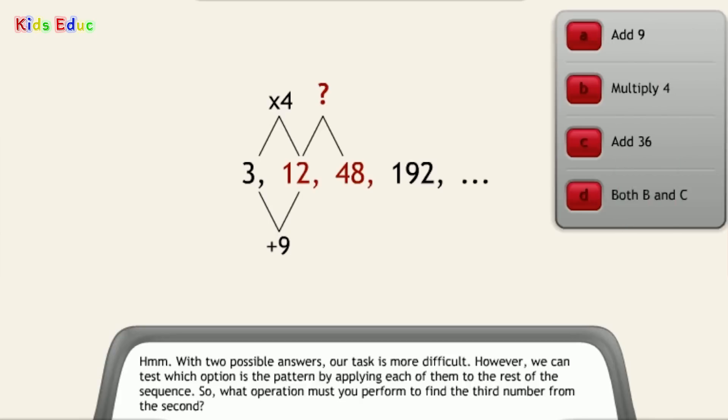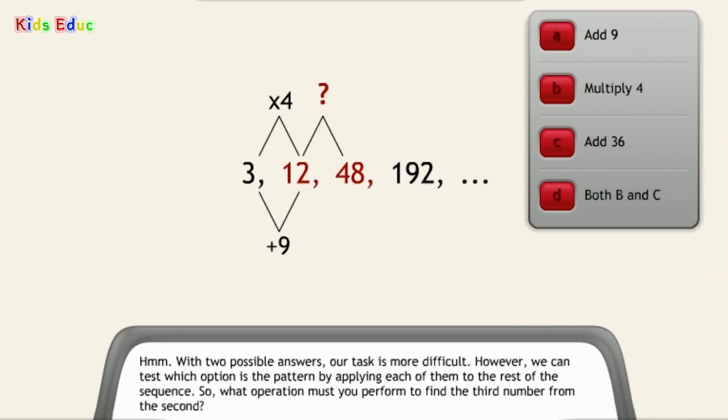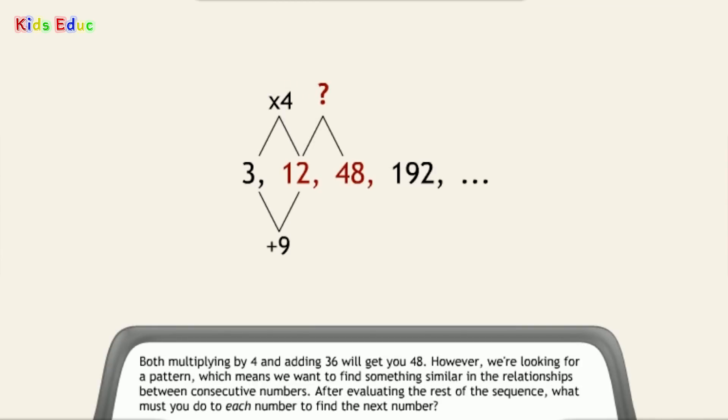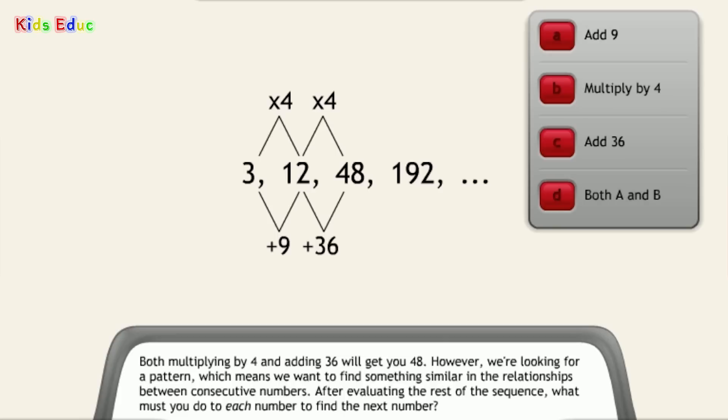What operation must you perform to find the third number from the second? Both B and C. That's the correct choice. Both multiplying by 4 and adding 36 will get you 48. However, we're looking for a pattern, which means we want to find something similar in the relationships between consecutive numbers. After evaluating the rest of the sequence, what must you do to each number to find the next number? Multiply by 4. That's right.